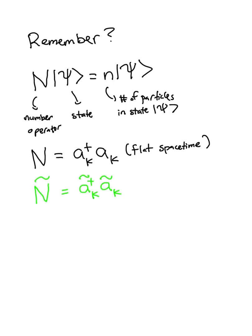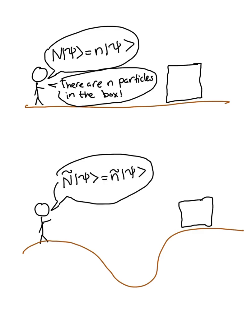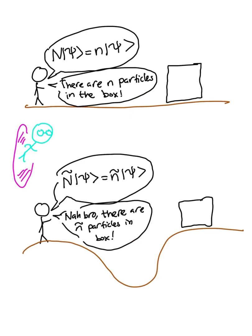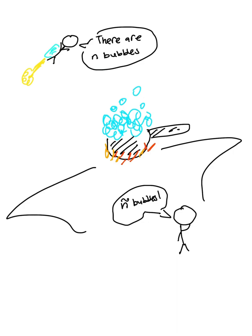Since the number operator tells us how many particles are in our system, this means that the formula for the number of particles that some observer will use will change in curved spacetime, and hence the number of particles that count in a system will change as well. This essentially boils down to saying that an observer in flat space will disagree with an observer in curved space about the number of particles in a system.